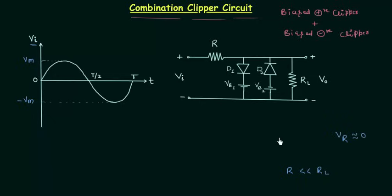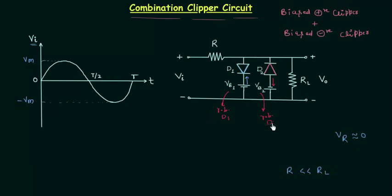If I only consider Vb1, the direction of current is opposite to the direction of the arrow in the symbol of diode D1, so diode D1 is reverse biased by Vb1. Similarly, if I only consider Vb2, the direction of current is opposite to the direction of the arrow in the symbol of diode D2, so Vb2 is also reverse biasing diode D2.